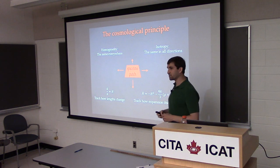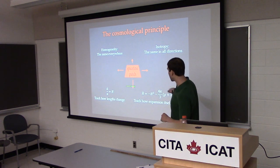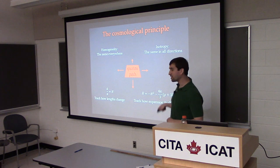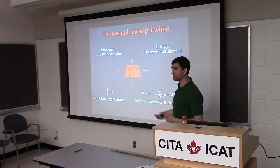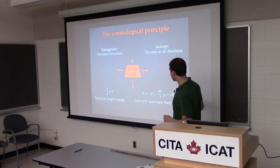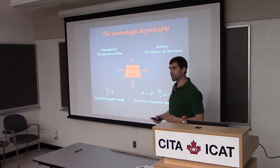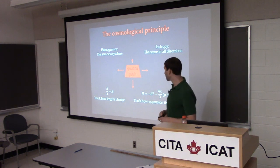There's a single length scale that describes how our universe looks on large scales. If I demand that there's just a single length scale, plug that assumption into Einstein's equations, out pop the Friedmann equations, and that tells us how this length scale behaves as a function of time, and how the rate of expansion behaves as a function of time. It's self-sourced and can also be sourced by whatever matter components we have in the universe.